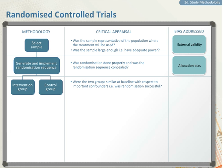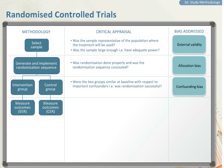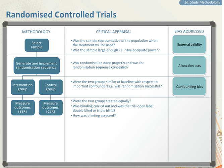Then identify outcomes in the experimental group and the control group — the EER and CER. Ask yourself: were the two groups treated equally except for the intervention? Was blinding carried out, and was the trial open label, double blind, or triple blind? How was blinding assessed? This minimizes information bias.